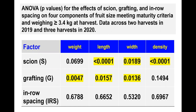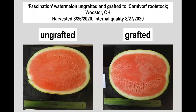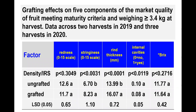ANOVA also showed that fruit characteristics differed between varieties, which is no surprise, and were influenced by grafting more often than not, but they were not influenced by in-row spacing. The two fruits shown here typify fruit from grafted and non-grafted plants for the variety Fascination, possessing characteristics average for their type and in-row quality from 2020. A brief glimpse at the fruit quality data suggests that fruit from grafted plants were similar in color, had higher stringiness scores, and thicker rinds than fruit from non-grafted plants, although the Brix and internal cavity scores were similar.